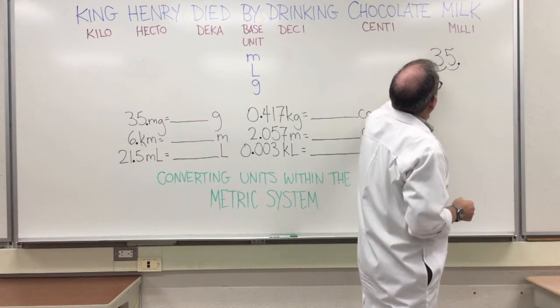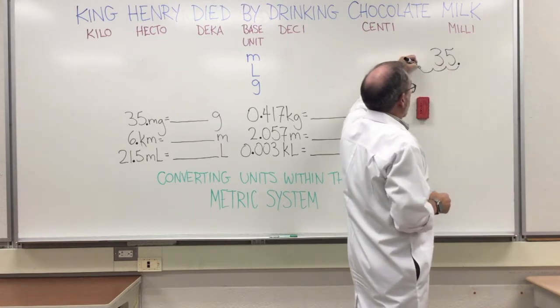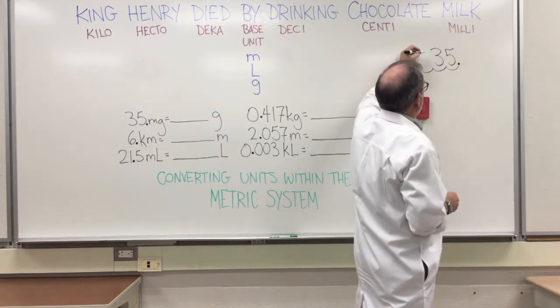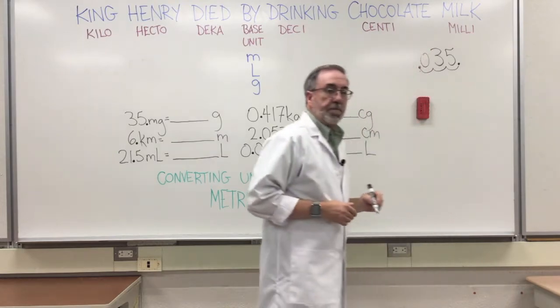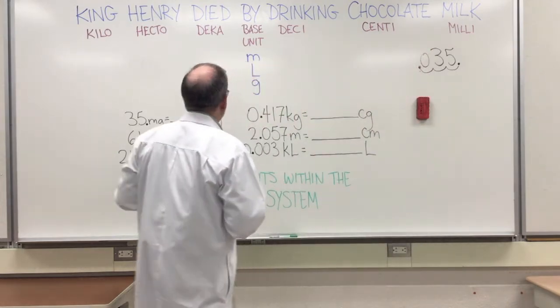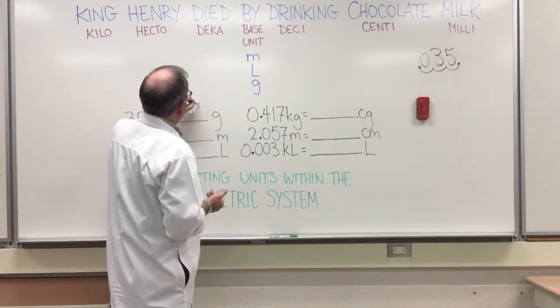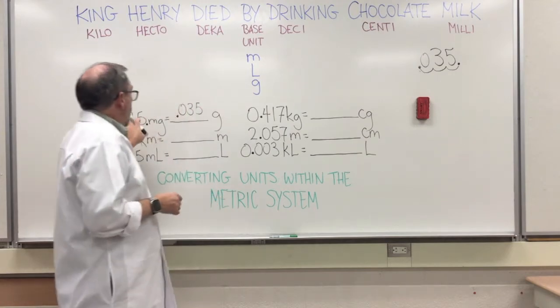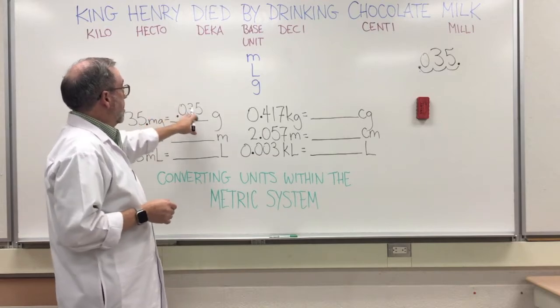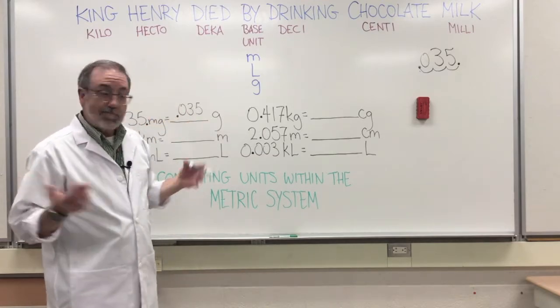And in this empty space you're going to put a zero. So that's your answer - 0.035. So 35 milligrams is equal to 0.035 grams.